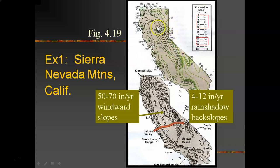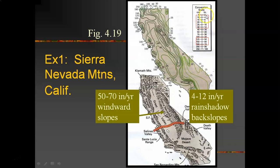I get these numbers by looking at this map using isolines called isohyets — I-S-O-H-Y-E-T-S — which are lines connecting points of equal precipitation. On the windward slopes you've got 125, 150, 180 in centimeters. On the back slopes you see 25, 20, 15, 10, and converting to inches that's where I get the 4 to 12 inches of precipitation.